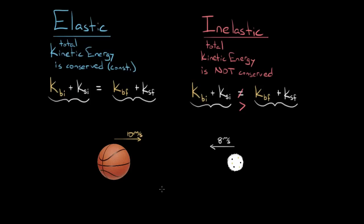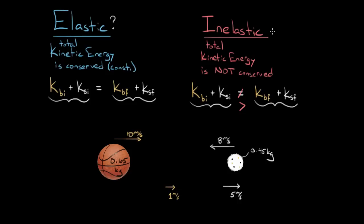After they collide, let's say this basketball is still moving to the right but only at about 1 meter per second, and this scoop of ice cream gets knocked and is now going 5 meters per second to the right. The mass of a basketball is about 0.65 kilograms. In order to conserve momentum for this collision — and almost all collisions should be conserving momentum — the mass of this scoop of ice cream should be about 0.45 kilograms.